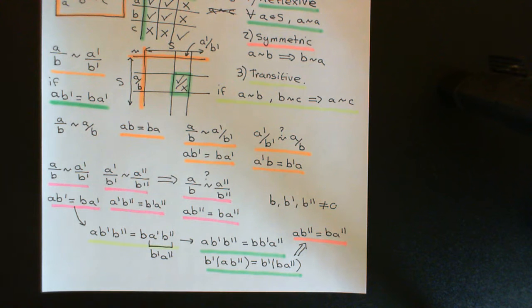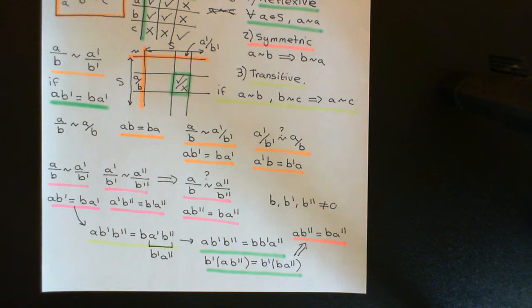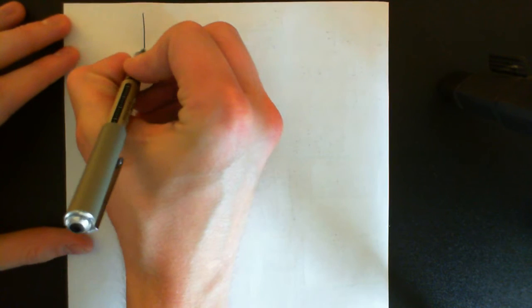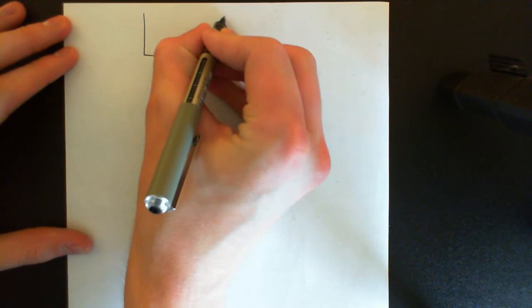Welcome back to this next video in which we are discussing fraction fields. We've now successfully defined an equivalence relation on our set of all fractions, and what we now want to do is use this equivalence relation to partition up our set of fractions. Let's go over the page and I'll now explain how you can use an equivalence relation to partition up a set, working with our specific example of our set of fractions.